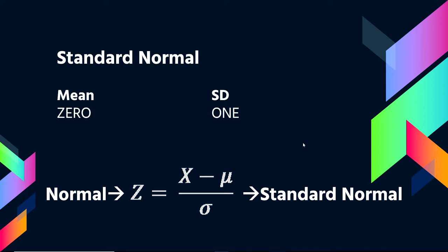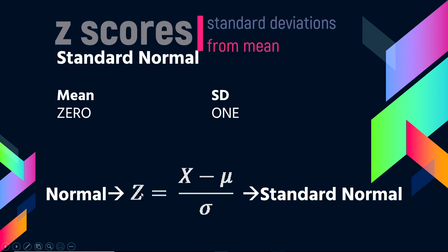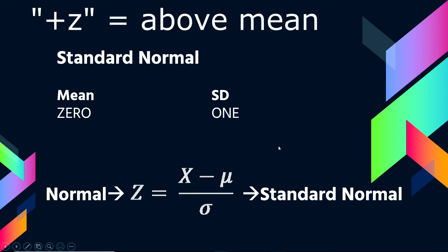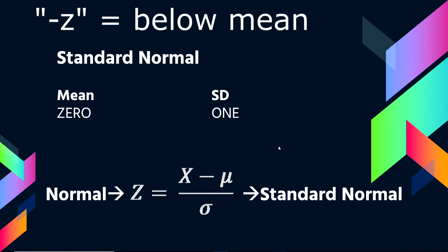So standard normal scores are by definition measured in standard deviations. So a z-score is a score in standard deviations. So if you get a z-score of positive 2, that means that that score is two standard deviations above normal. If you get a z-score of negative 1, it means that that score is one standard deviation below the mean.